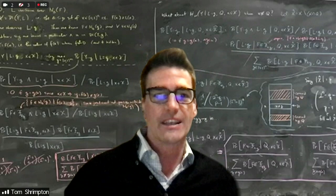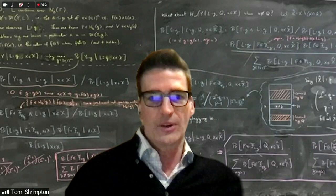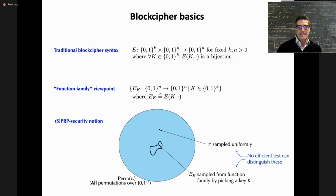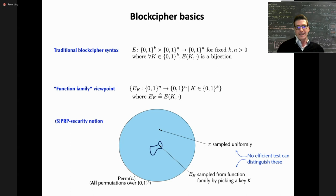Just to make sure we're on the same page: a traditional block cipher takes a k-bit key and an n-bit data block, and outputs an n-bit string. What makes it a block cipher is that for every fixed key, the mapping is a bijection — a permutation. We think of it as a family of functions indexed by the key, each being a permutation over n-bit strings.